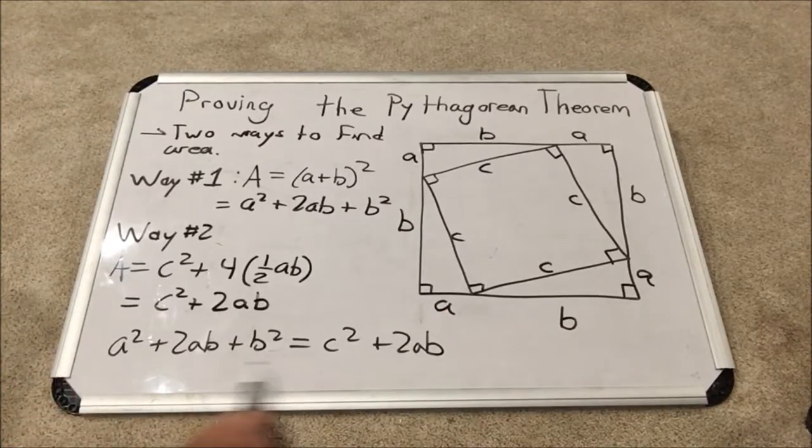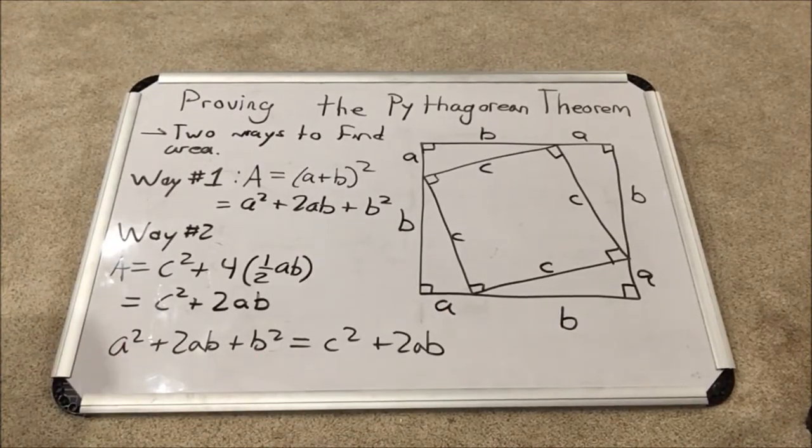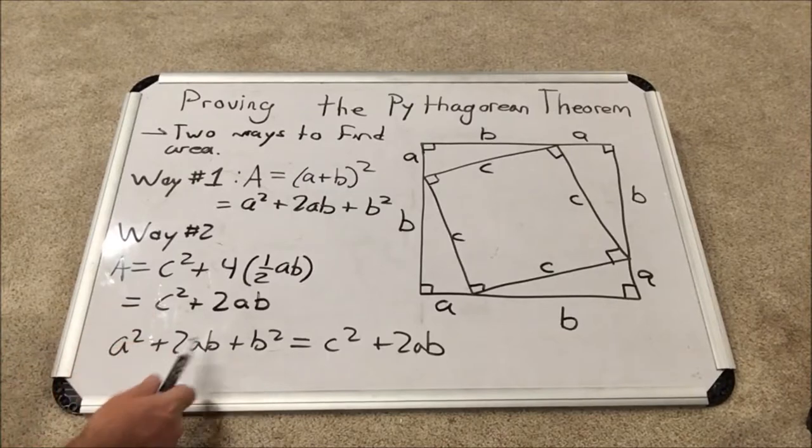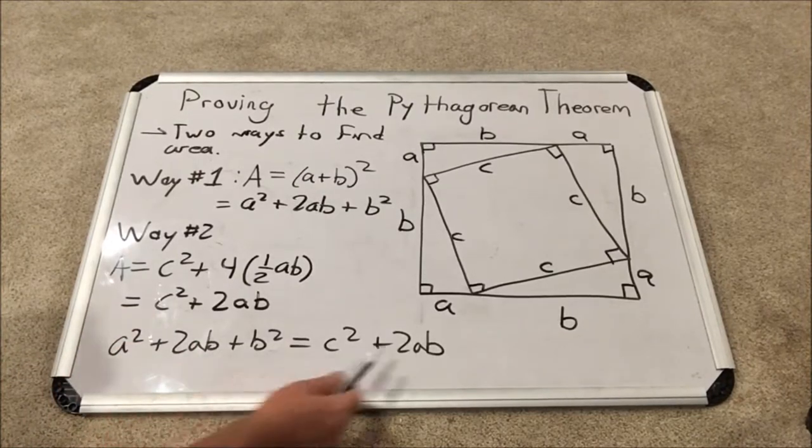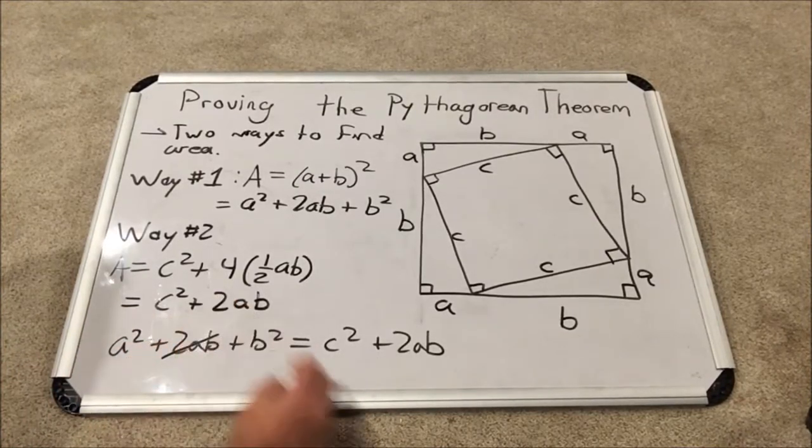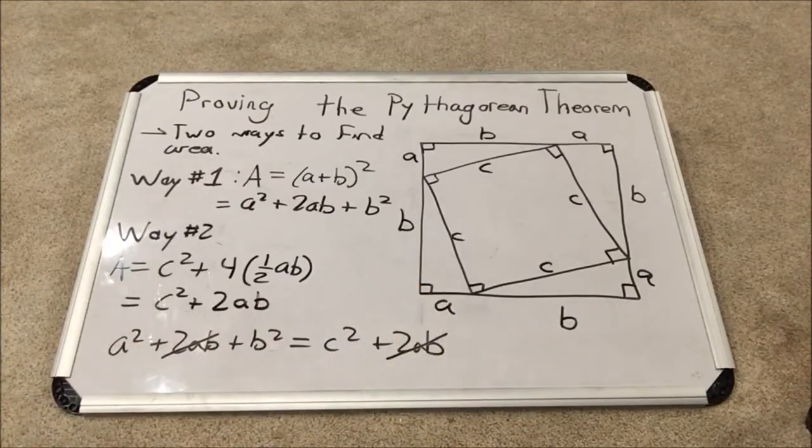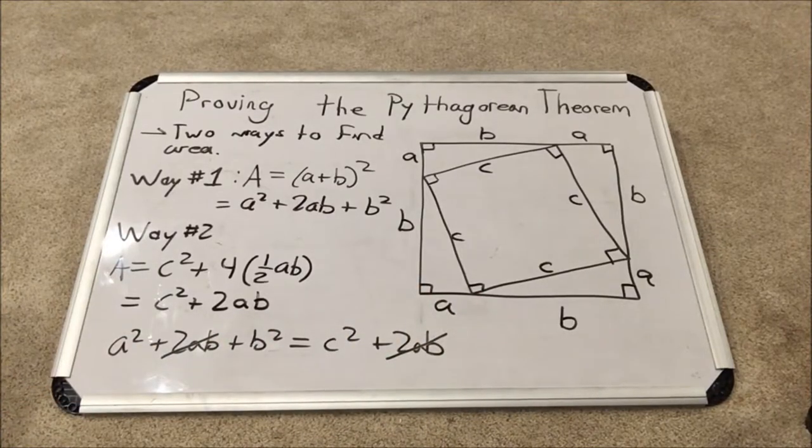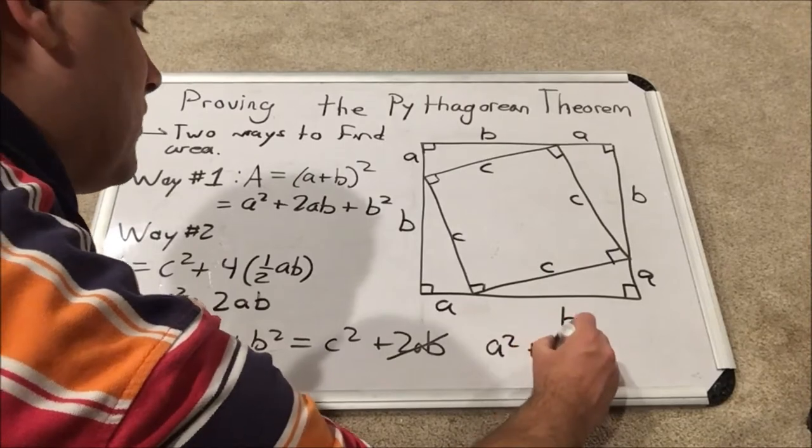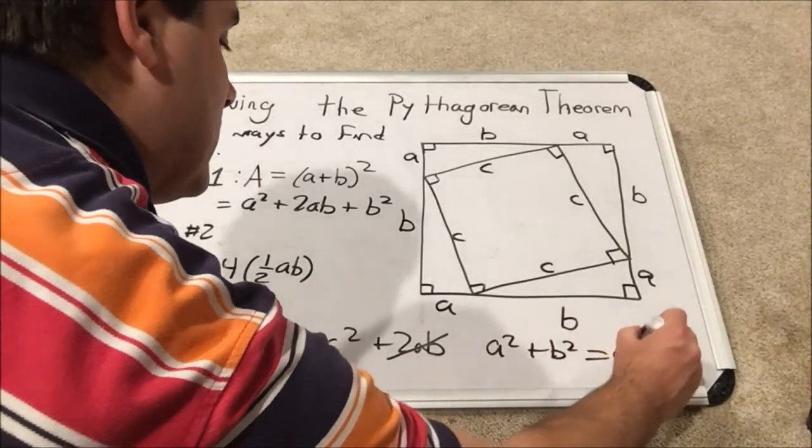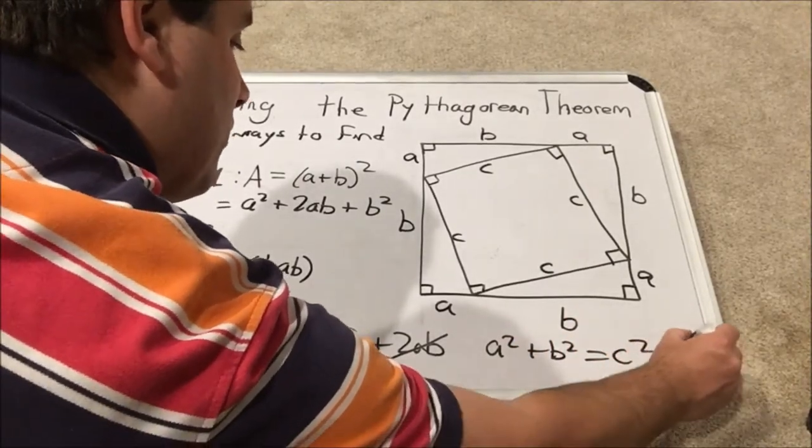Now, we look at this equation, and we notice that there's something that appears on both sides. This term, 2 times A times B, is on both sides, and we can cancel it. And look at what's left. None other than A squared plus B squared equals C squared. We are finished with the proof.